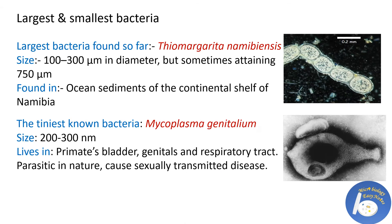There are different sizes of bacteria, but the largest bacteria found so far is Thiomargarita namibiensis. Its size is 100 to 300 microns in diameter, but sometimes it can attain 750 microns. This bacteria is found in the ocean sediments of the continental shelf of Namibia.